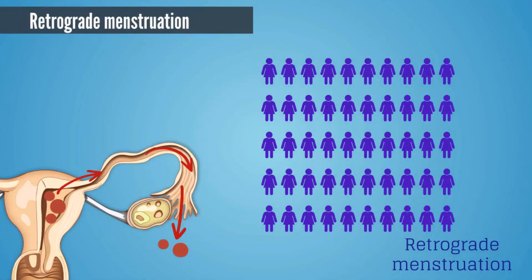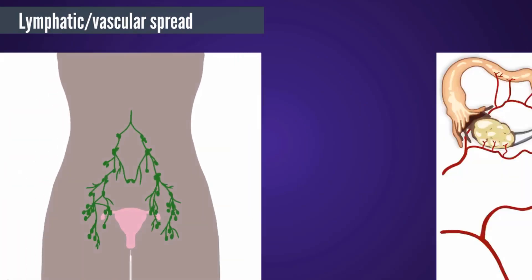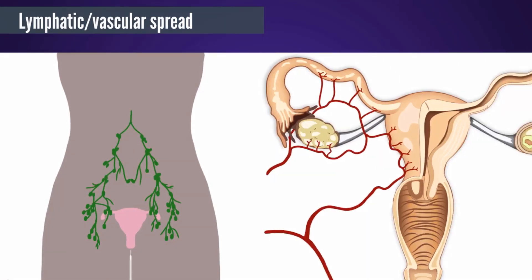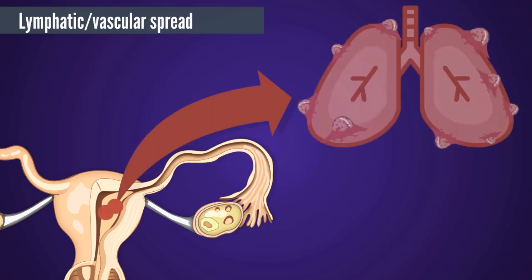However, most women have retrograde menstruation, but only a few have endometriosis, so other factors must play a role. Endometrial tissue may also spread through the lymphatic and vascular systems. For instance, endometriosis has been found in pelvic lymph nodes of women with endometriosis. In addition, endometriosis can be found in unusual and distant locations, like the lungs.